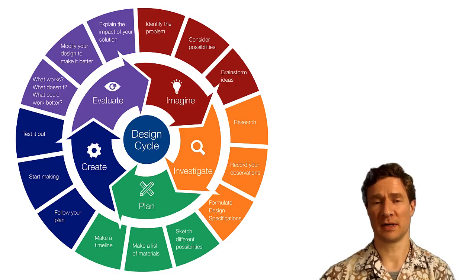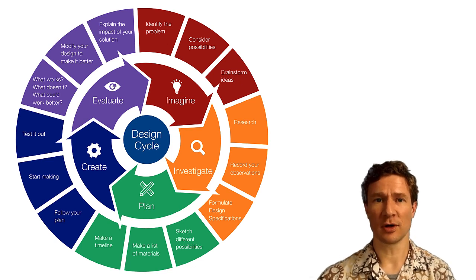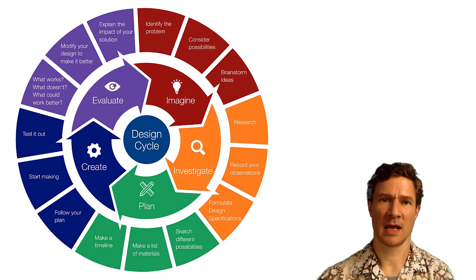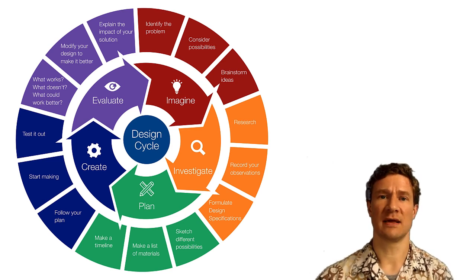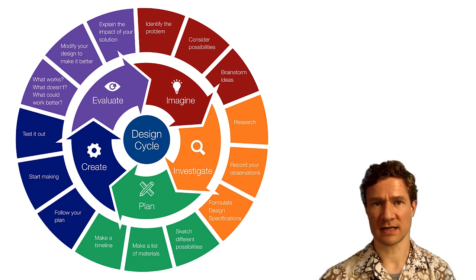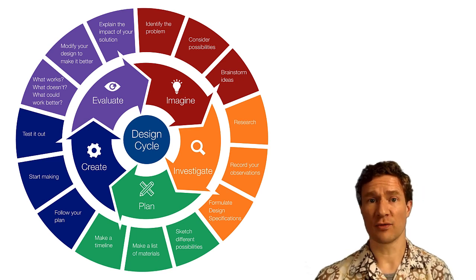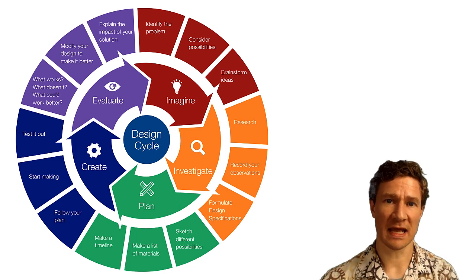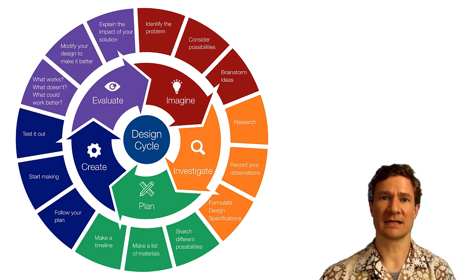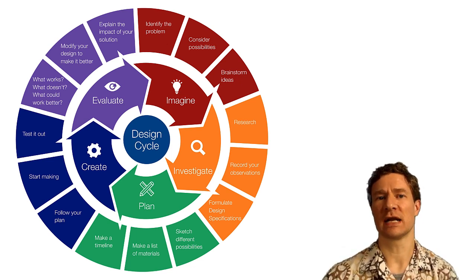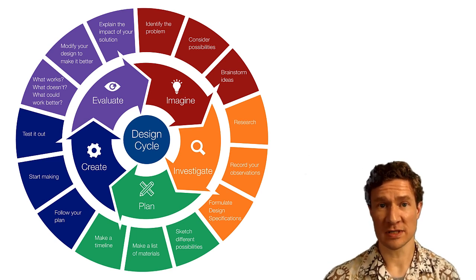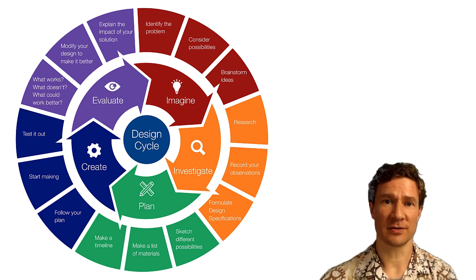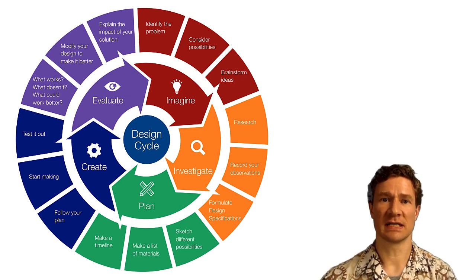In the computer science and engineering department, we believe that the best way for you to learn is by designing, building, and making yourself. You're going to see us refer to the design cycle quite a bit in this class. We believe that going through the process of getting an idea, doing some research, creating something, testing it, and making a plan for the next version helps you learn a lot about computer science and engineering. You'll be developing many skills at each stage of the design cycle.